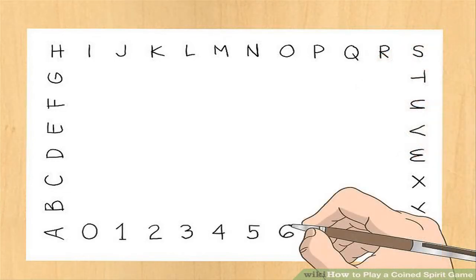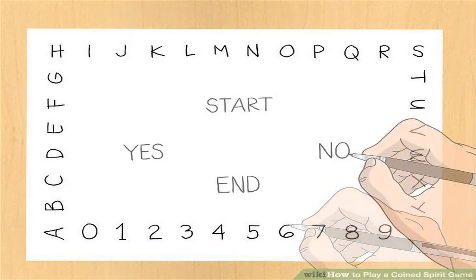Write numbers 0 to 9 across the center of the paper. Some questions may require a numerical answer. You may want to find out how old the spirit is or when they were alive.